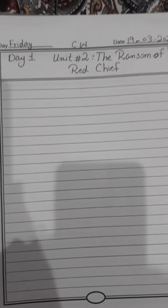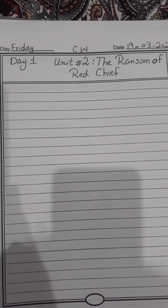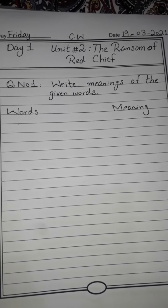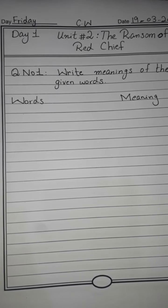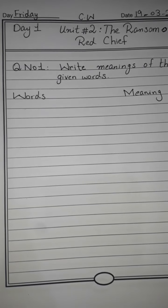First we will mention the day and date and write 'classwork'. Because today is Day 1, we will mention Day 1. We will write our unit number and then our unit name. We will give the right meaning of the given words. Words we will write with a black pointer, and the meanings we will write with a blue pen.